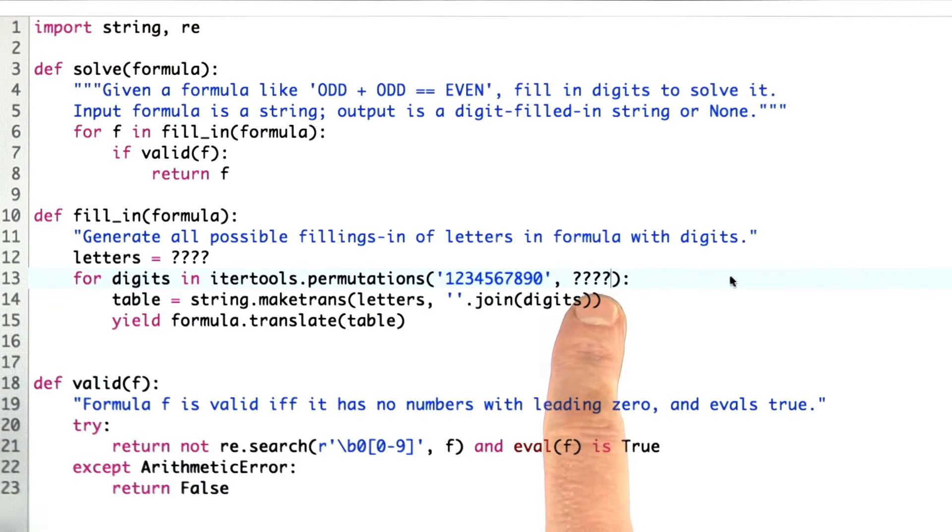And you have to fill in the right value of n, and then it builds a table from taking the letters, and so that means you want to make sure that the letters up here are represented as a string and not as some other type of collection. It makes a translation table from the letters and a string of all the digits that we got out of the permutations.